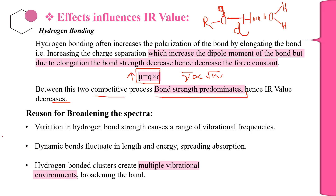In hydrogen bonding, the IR peak also becomes broadened. The reason for this broadening is that variation in hydrogen bond strength causes a range of vibrational frequencies. Due to dynamic bond fluctuation in length and energy, the particular group absorbs different wavelengths or different energy values of the IR spectrum, causing a broadened spectrum. Additionally, hydrogen bonding clusters create multiple vibrational environments, which further broadens the band.